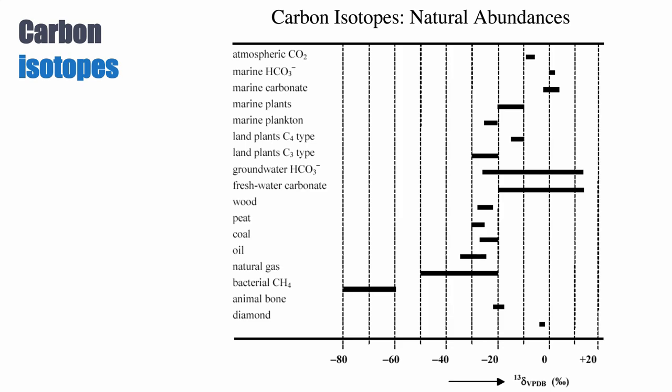It's also interesting to look at water. Groundwater and freshwater have a delta C13 ranging between minus 20 to plus 20. That large range has a lot to do with the source of the water, the amount of organic carbon dissolved in it, the amount of carbonates dissolved in it, and the interaction the water had with the host rock.